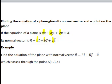So let's have a look at an example of applying this in practice. Suppose we want to find the equation of a plane with normal vector 3i plus 5j minus k where the plane is also known to pass through the point (1, 3, 4).